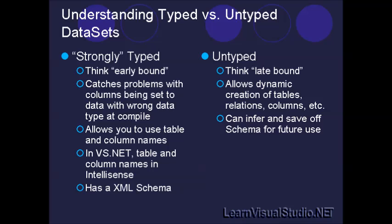There's also the concept of typed versus untyped data sets. Typed, or strongly typed, data sets allow you to do some pretty neat things, but they do restrict you in other areas. Think of strongly typed data sets as early-bound data sets — we know the structure of the data table, we know what the columns look like and what their data types are in advance. So when we're in the Visual Studio .NET IDE, we can use IntelliSense to refer to our tables by name and our columns by name, instead of using a string identifier or an ordinal identifier for a given column or table.